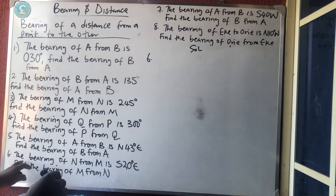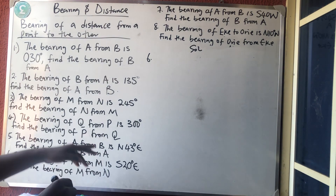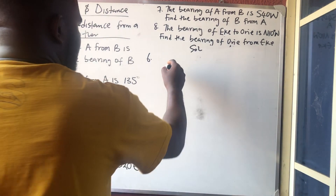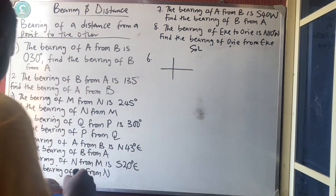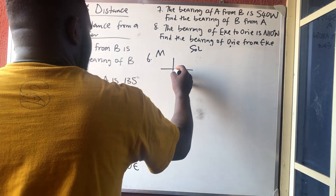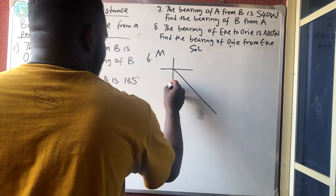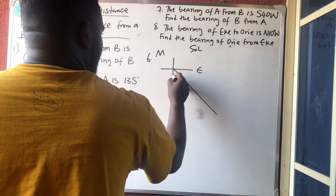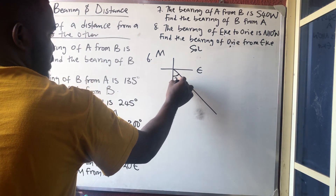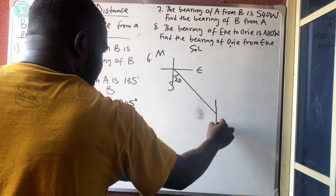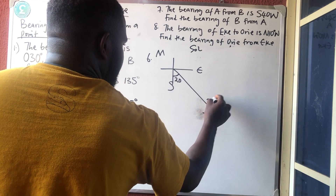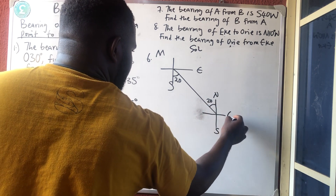Number six. The bearing of N from M — from M — is south 20 degrees east. South and east is in the second quadrant, so I will draw it here. The bearing of N from M — this is from my M. I'm drawing it here because here is my south and my east. It is 20 degrees, and it must be with that south. I cut like this, and then cut like this. So if here is 20, automatically this side is 20. North, south, east and west.